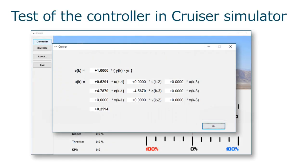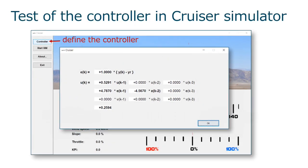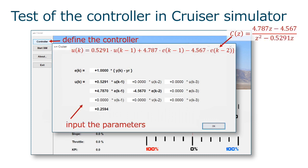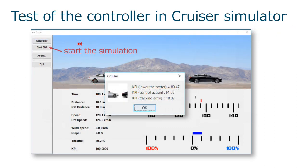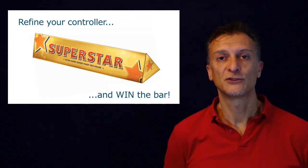And define the controller by inputting the parameters: the value associated to uk-1, the value associated directly with ek, and the value associated with ek-2. Run the simulation and voila! A KPI of approximately 18. Refine your controller and win the bar.